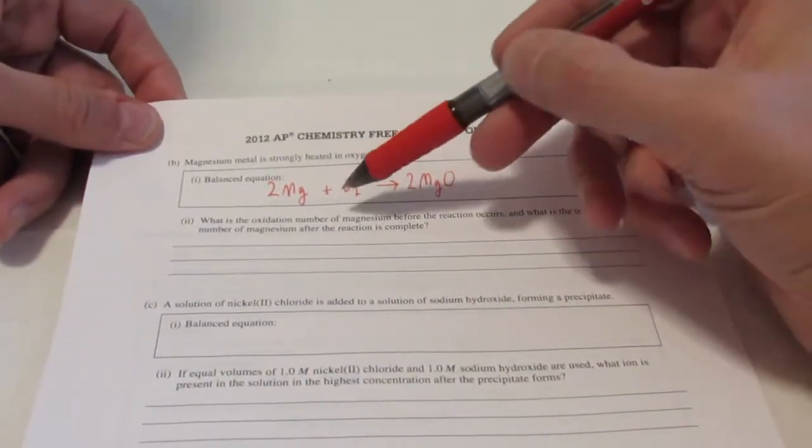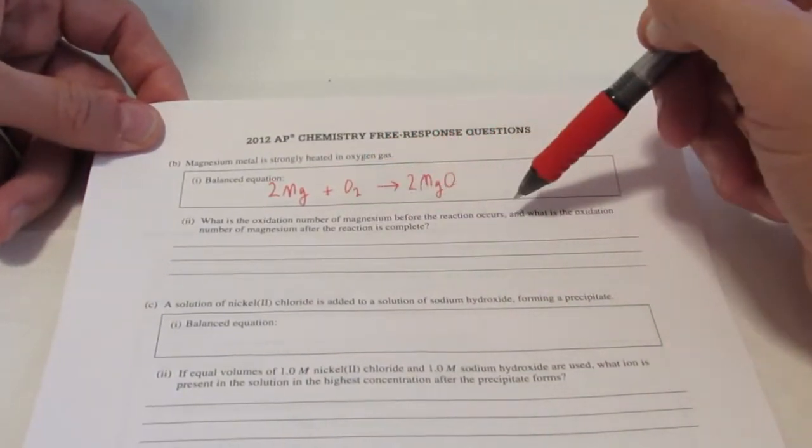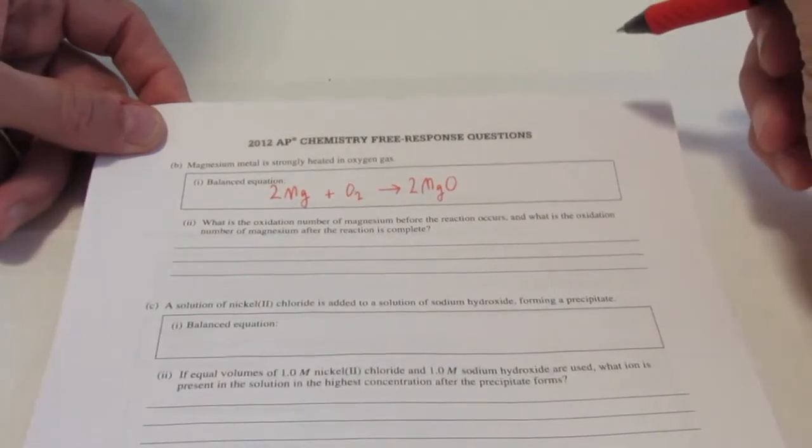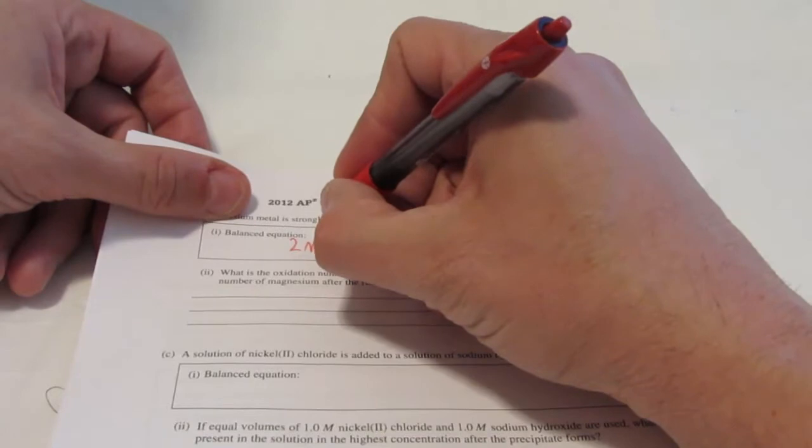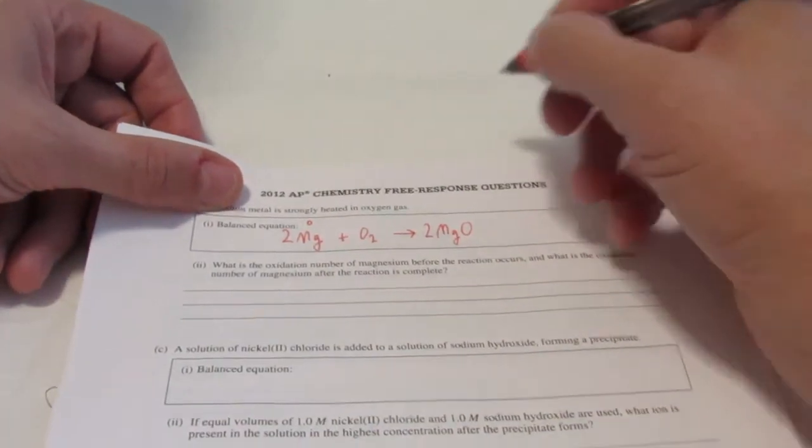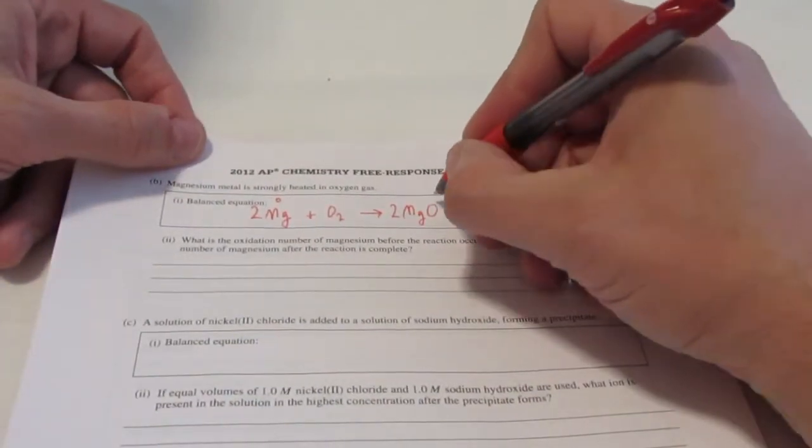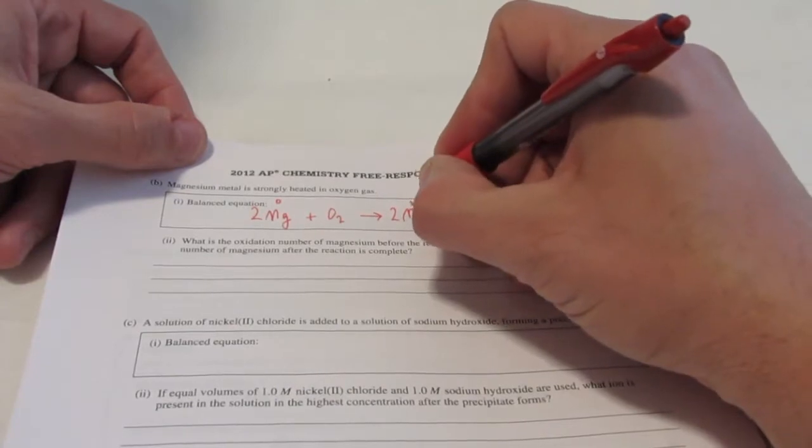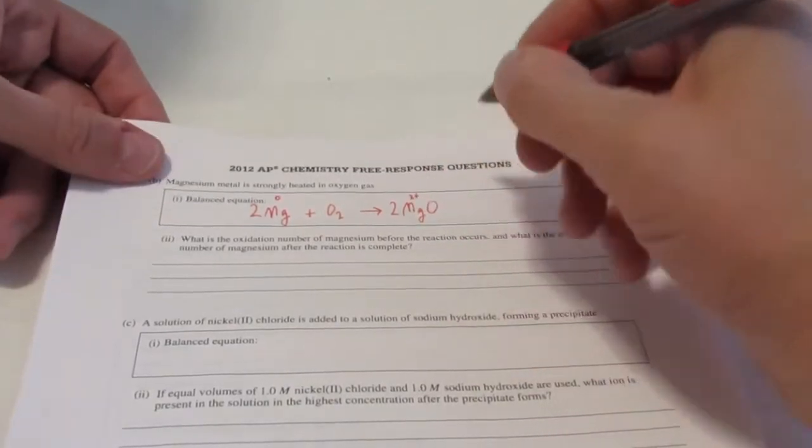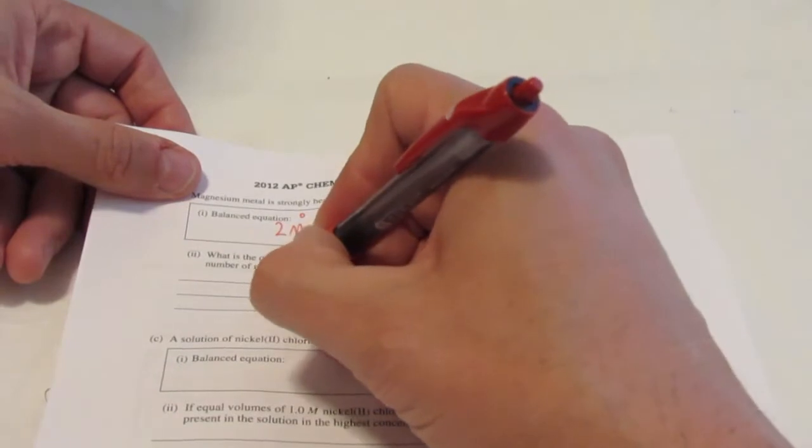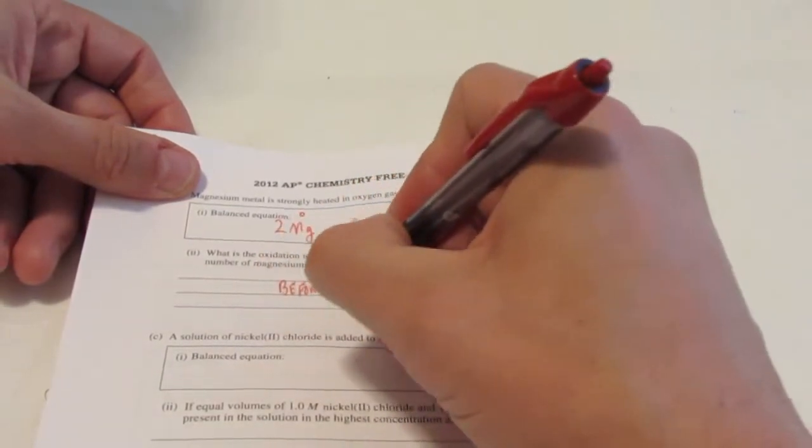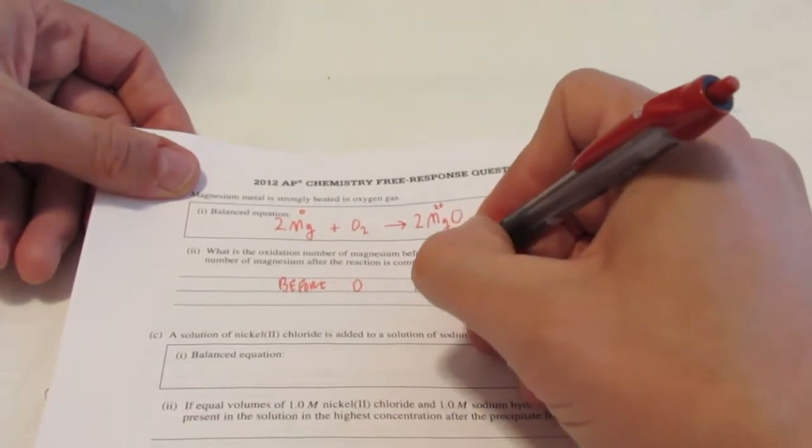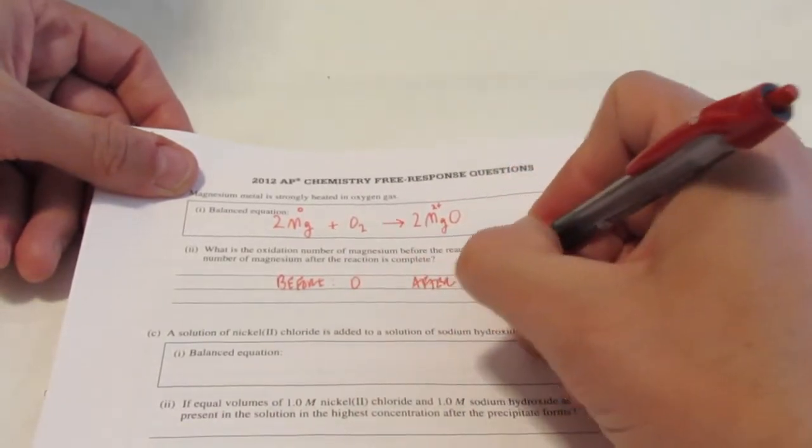The question they ask is, well, what's the oxidation number of magnesium before, and what's the oxidation number after? Let's figure it out. It's in its elemental state before, and the oxidation number of an element is zero. Afterwards, it's stuck to an oxygen. We know oxygen is two negative, so it ends up as magnesium being two plus. So before it is zero, and after it is two plus.